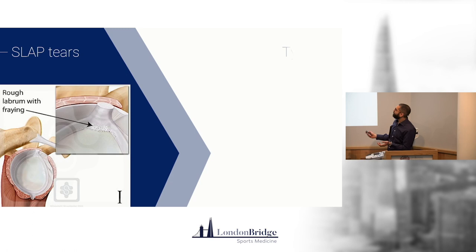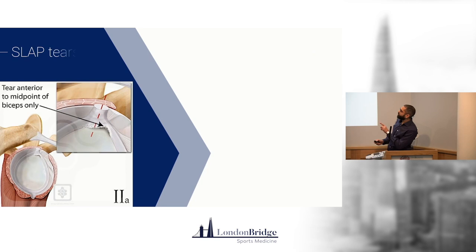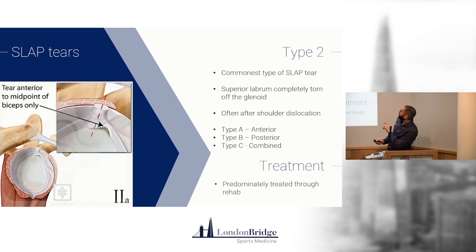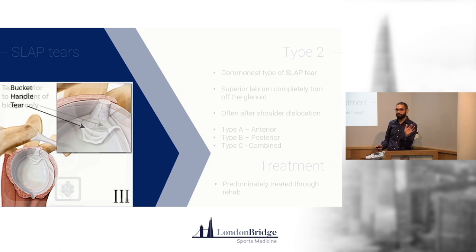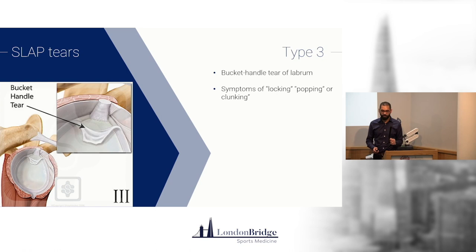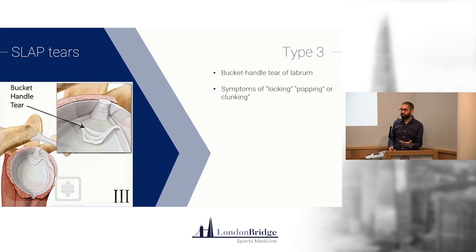A quick overview of SLAP tears: there are four types, and the most common is type two. You can get anterior, posterior, or combined SLAP tears. Types three and four are where surgical colleagues need to be involved — they're like a meniscal bucket handle tear, with a bit of cartilage or labrum flapping around in the shoulder joint causing mechanical symptoms and pain.